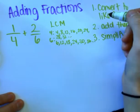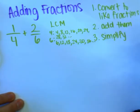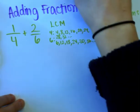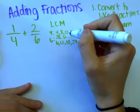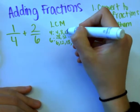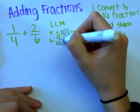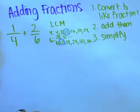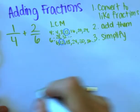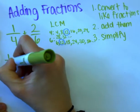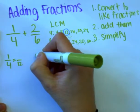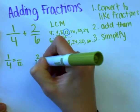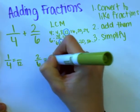I already see a multiple that they have in common. The lowest — meaning the smallest — multiple that they have in common is 12. So I am going to convert both one-fourth and two-sixths to twelfths so that I can add them together.